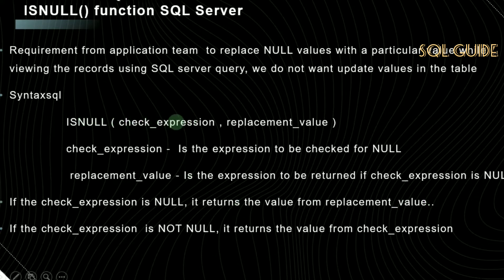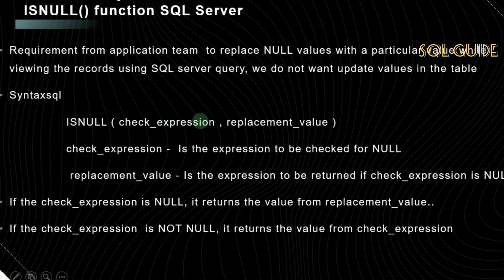If the check_expression is null, it will return the value from replacement_value. If the check_expression is not null, it will return the check_expression itself — not the replacement value.